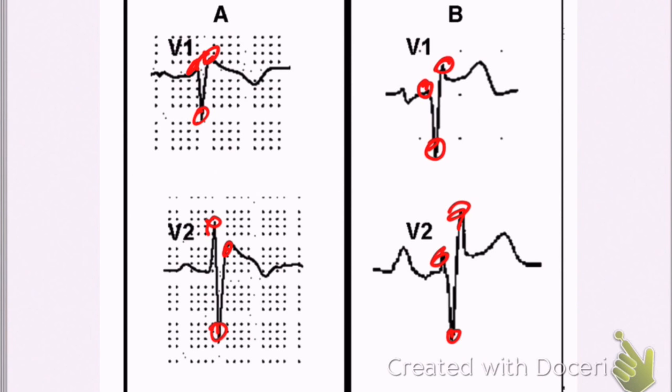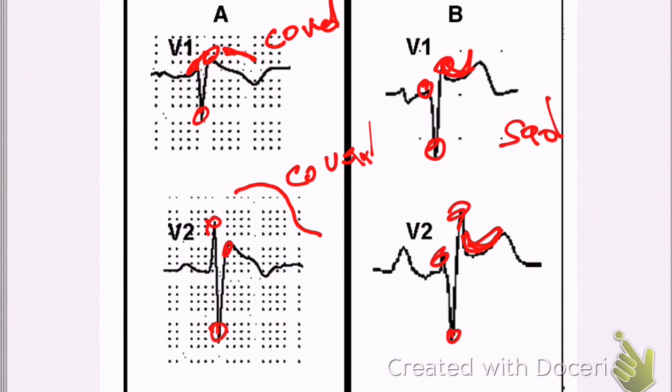But what they're pointing out here is that there's two, actually more than two, but they're showing two different types of Brugada syndrome. Type A, which is sort of called coved, or it goes like this. So it's coved. And here it's, again, coved. But on this one, it's more of a saddle. You see this saddle appearance? Saddle appearance.